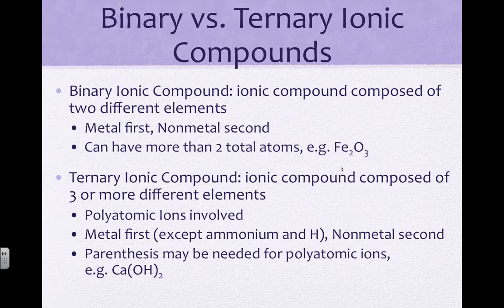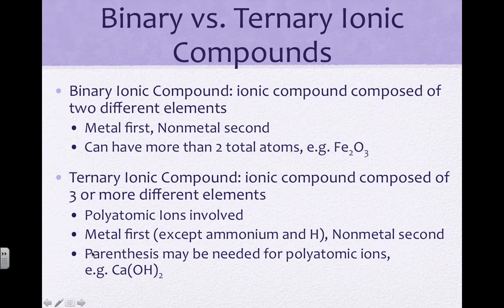Ternary compounds are ionic compounds composed of three or more different elements. Whenever you see three or more elements, there is a polyatomic ion involved, and hopefully through your memorization you'll be able to pick out where the polyatomic ion is. The metal is listed first, with the exception of ammonium and hydrogen. The non-metal or anion will be listed second, and ninety-nine percent of the time the anion is going to be the polyatomic ion.